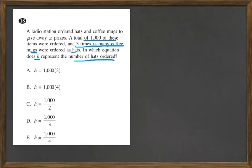Well, we know that the number of hats plus the number of coffee mugs is going to equal 1,000. So let's represent C in terms of H so we can solve this. Coffee mugs is the same as three times the number of hats.